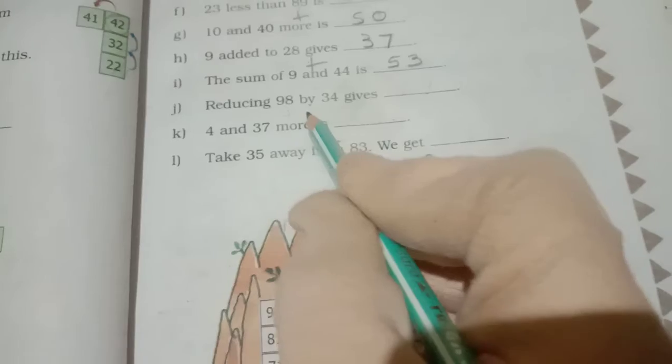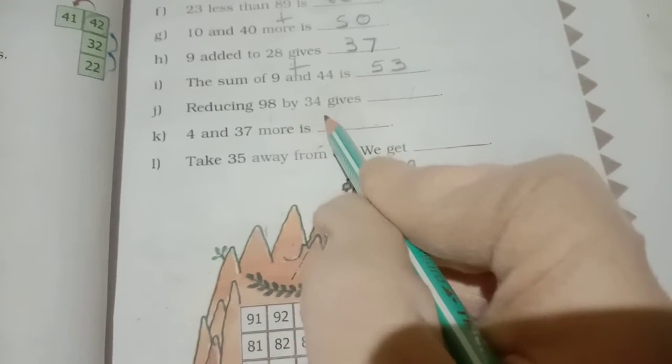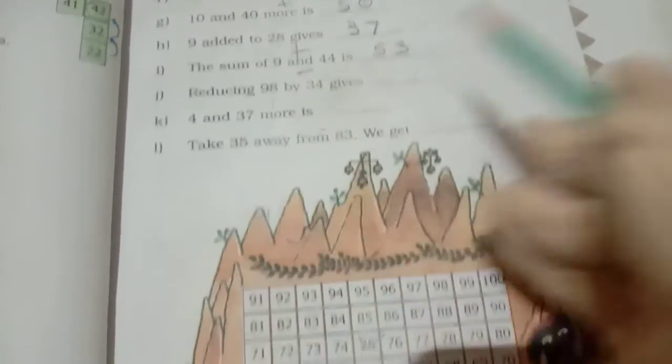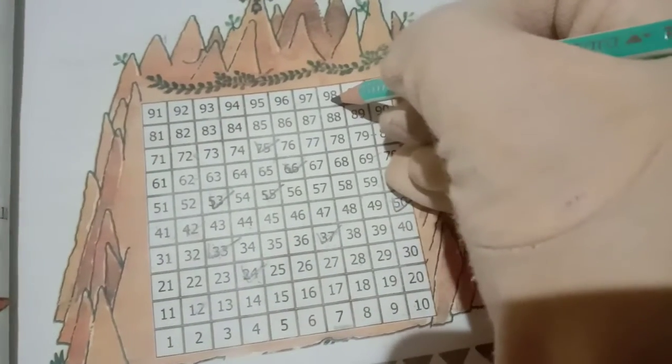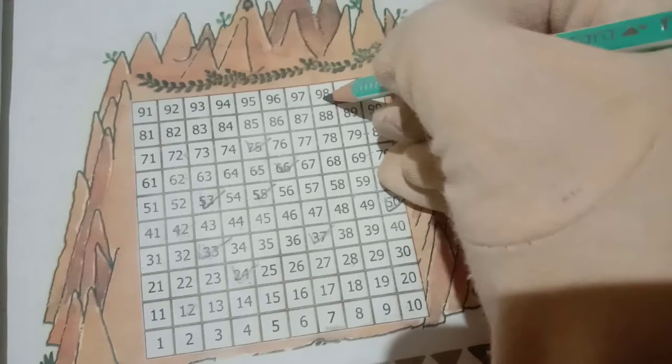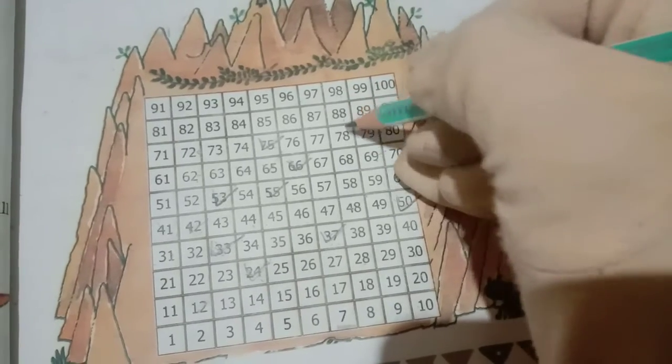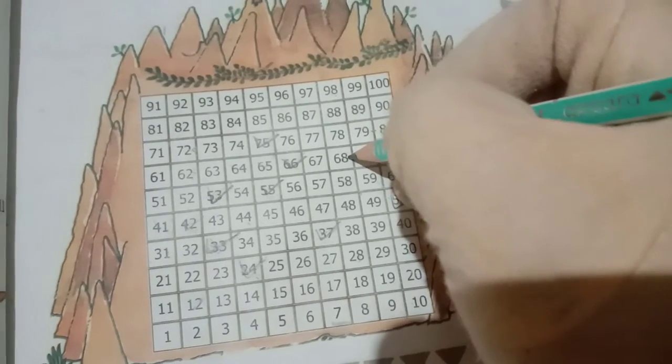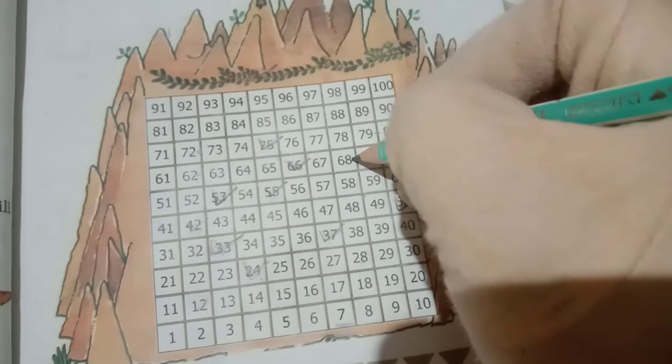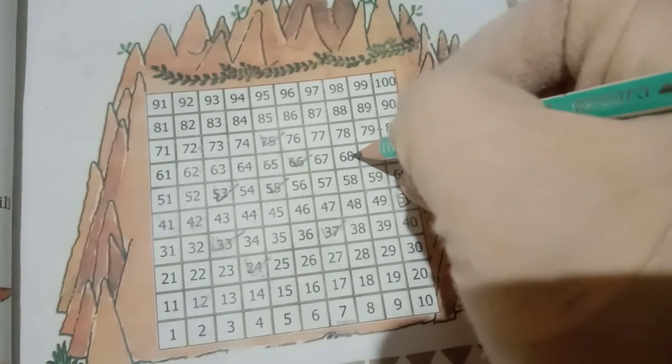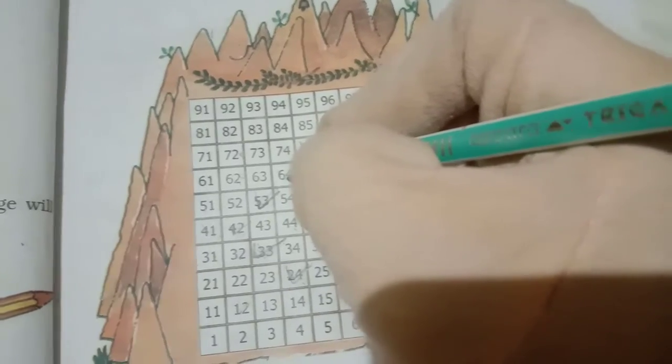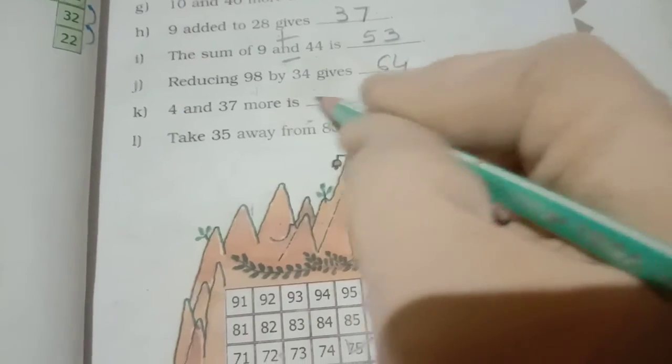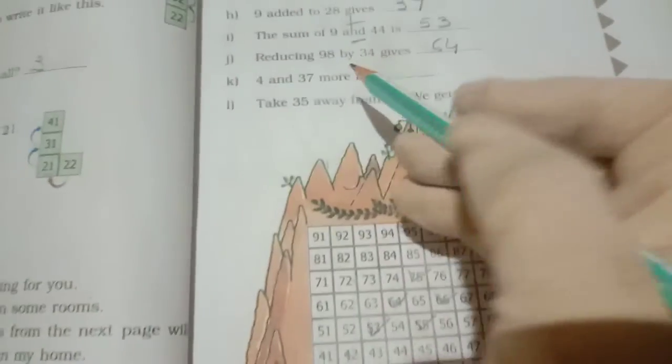Now next reducing 98 by 34. Reduce means minus. So 98, we go 3 steps down. 1, 2, 3, 10, 20, 30 means 68. That we go left side 4. 1, 2, 3, 4. So answer will get 64. Reduce means minus. So 3 steps we have to go down and go to left side 4 steps.